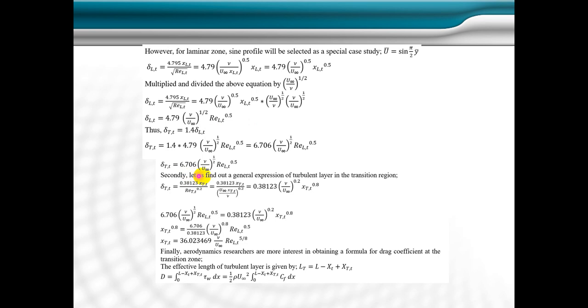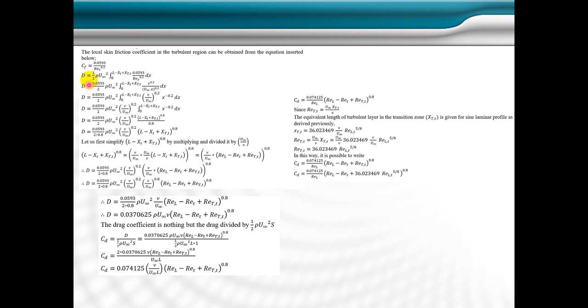Similarly, we take the similar procedure for the turbulent boundary layer that had been illustrated before. After that, we substitute this value here in order to find out the thickness, the length of the turbulent transition region in terms of Reynolds number. Also, we find out the friction coefficient in the transition region, and the drag coefficient had been presented and discussed and derived in terms of Reynolds numbers.